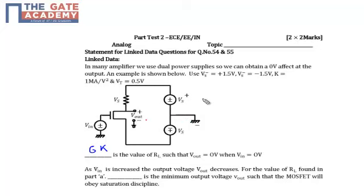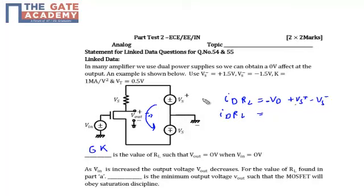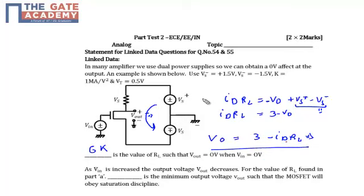In this second problem, I need to find out the condition of V0 such that my transistor will remain in the saturation region. Earlier, we applied KVL in the loop and found that ID·RL is equal to Vs+ minus Vs- minus V0, which gives V0 = 3 - ID·RL. So my V0 is related to the drain current as 3 minus ID·RL.